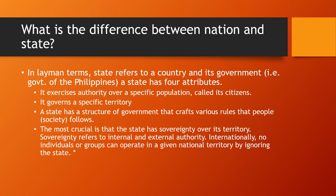Sovereignty refers to internal and external authority. Internally, no individuals or groups can operate in a given national territory by ignoring the state. This means that churches, civil society organizations, corporations, and other entities have to follow the laws of the state where they establish their parishes, offices, or headquarters. Externally, sovereignty means that a state's policies and procedures are independent of the intervention of other states. Russia or China, for example, cannot pass laws for the Philippines, and the Philippines cannot pass laws for Russia and China.